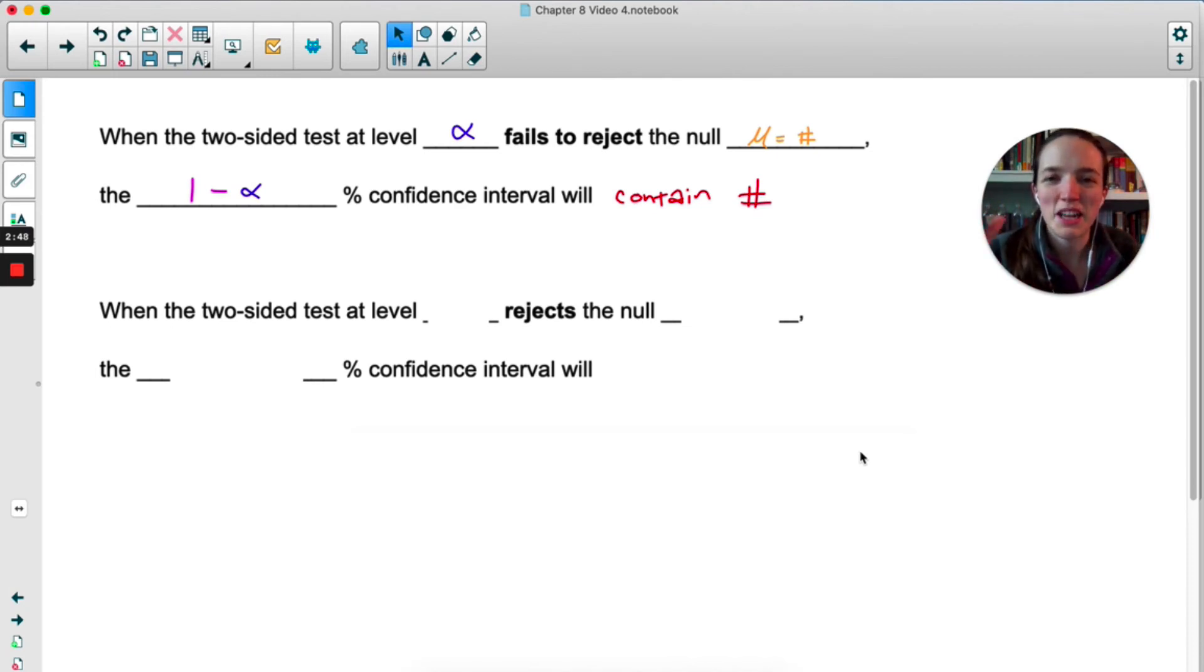So let's think of this using an example instead of all these symbols. If we do a two-sided test at, let's say, 0.05 as our significance level, and we fail to reject the null of mu equals 29.5, like in the last example, the 95% confidence interval would contain 29.5.